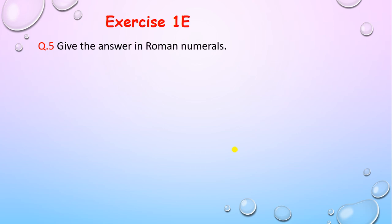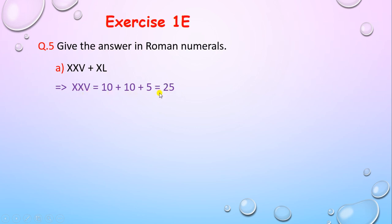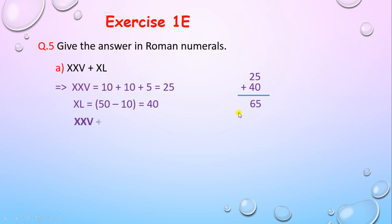Next question: give the answer in Roman numerals. First: XXV plus XL. Convert to the Indian system: XXV equals 10 plus 10 plus 5 equals 25. XL: smaller before bigger, so subtract 10 from 50 equals 40. Now add: 25 plus 40 equals 65.